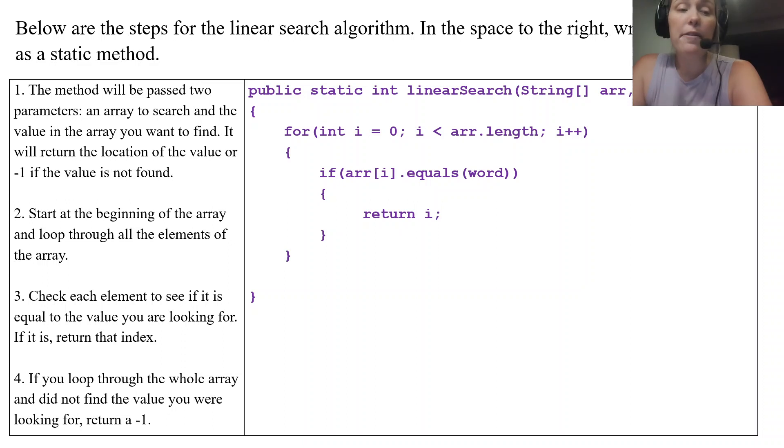And then if you loop through the whole array and you didn't find what you were looking for, you want to return a negative one. So outside the for loop we write return negative one, meaning we went through this whole for loop, didn't find what we were looking for, so you return a negative one to communicate that. And that's your linear search algorithm.